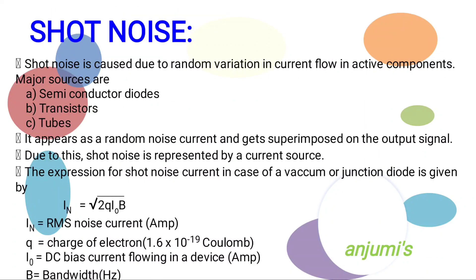Shot noise is caused due to random variation in current flow in active components. Major sources are semiconductor diodes, transistors, and vacuum tubes. It appears as a random noise current and gets superimposed on the output signal. Shot noise is therefore represented as a current source. The expression for shot noise current in the case of a vacuum or junction diode is: In = √(2QI₀B), where In is RMS noise current, Q is charge of electron, I₀ is DC bias current flowing in the device, and B is bandwidth.